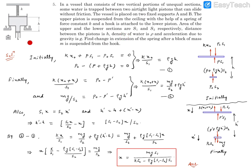First we need to handle this problem initially — what happens initially — because everything was at equilibrium. So we write the initial equilibrium equations, then we go to the final state, and then we assemble the two together.